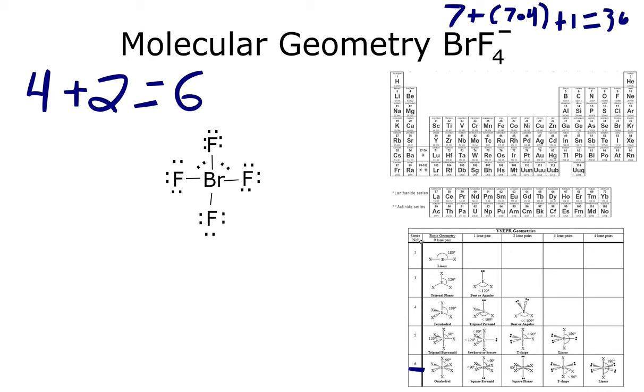So we'll come down here to our steric number, and we'll see 6. We do not have octahedral because this molecule would not have any lone pairs. We would not have square pyramid because this molecule only has one pair. Our answer would be square planar because this molecule has two lone pairs. So if you want to write that down, it would be square - if you can't see it - square planar. And that would be the molecular geometry for BrF4-.